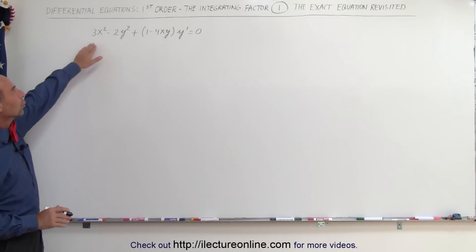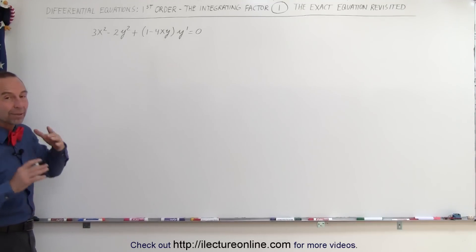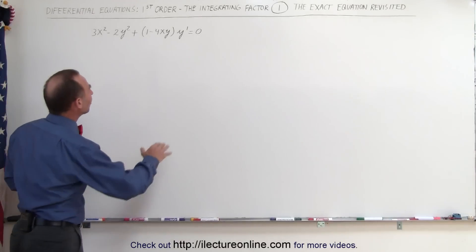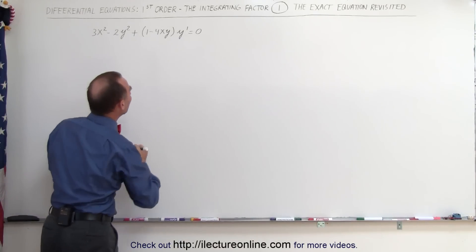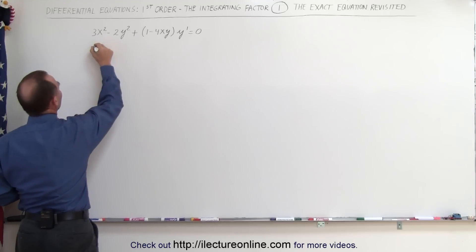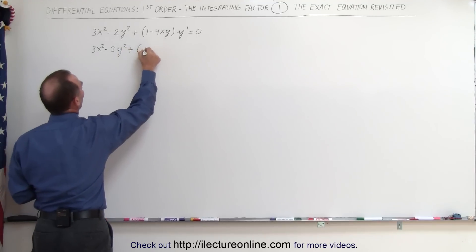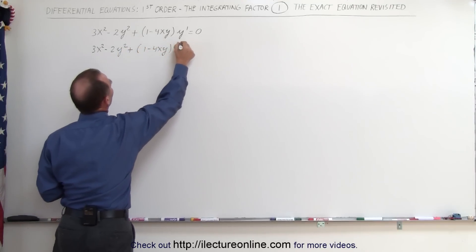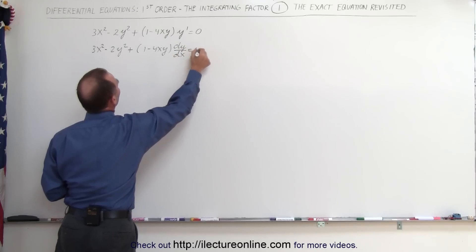Here is an equation that is an exact differential equation — the left side is in a total differential form, as we'll show in a moment. Let's rewrite this because y' can be written as dy/dx. So we can say this is: 3x² − 2y² + (1 − 4xy) times dy/dx = 0.